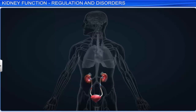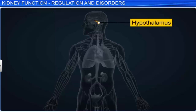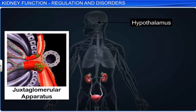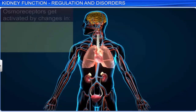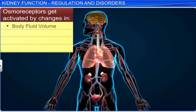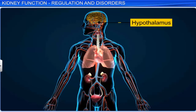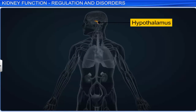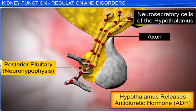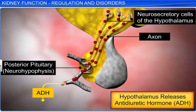Kidney functions are monitored and regulated by the hormonal feedback mechanisms of the hypothalamus, juxtaglomerular apparatus (JGA), and heart. Our body has several osmoreceptors that are activated by changes in the volume of body fluids, volume of blood, and ionic concentration. An osmoreceptor is a sensory receptor that detects changes in osmotic pressure. For example, a decrease in the level of body fluids activates the osmoreceptors, which stimulate the hypothalamus, which in turn neurally stimulates the neurohypophysis of the pituitary to release the anti-diuretic hormone (ADH), or vasopressin.